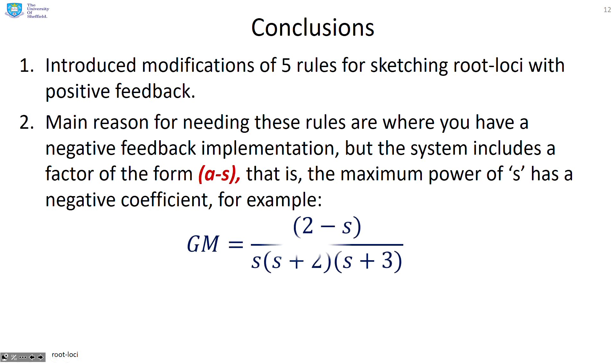So some conclusions. We've introduced the modifications of the five rules for sketching root loci with positive feedback. And the main reason for needing these rules are where you have a negative feedback implementation, but the system includes a factor of the form a minus s. So the maximum power of s has a negative coefficient, as you can see in this example here.